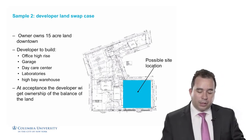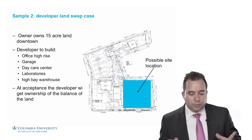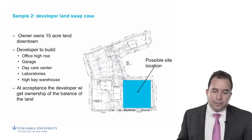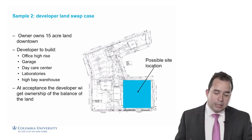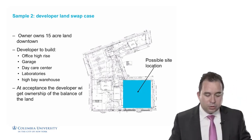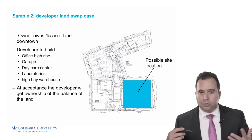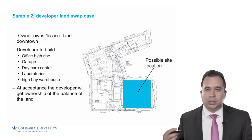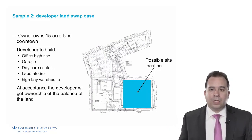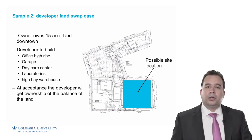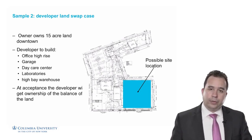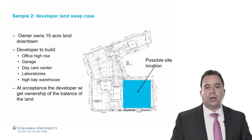The owner owns 15-acre land in certain parts of downtown and they want to engage a developer to build a certain asset. They have specifications for a high-rise building, garage, daycare center, laboratories, cafeteria, and so forth. At acceptance, they will agree to swap ownership of the remaining land — maybe 10 acres or 9 acres — to the developer.